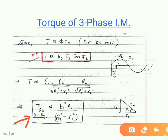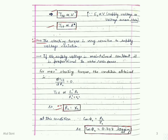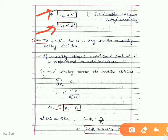We can conclude that the starting torque is directly proportional to V² and also directly proportional to the rotor resistance. This means the starting torque is very sensitive to supply voltage variations. If the supply voltage is maintained constant, the starting torque will be proportional to the rotor resistance.